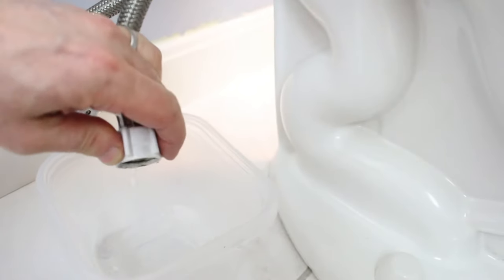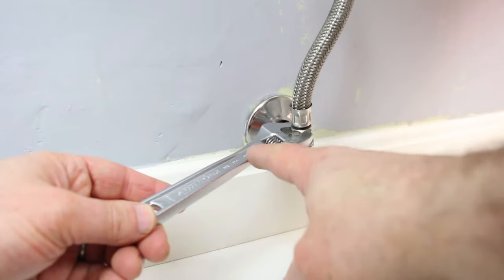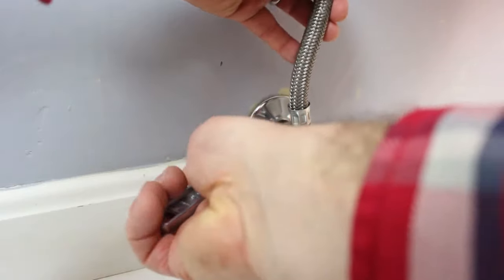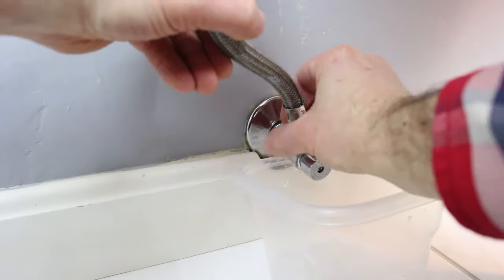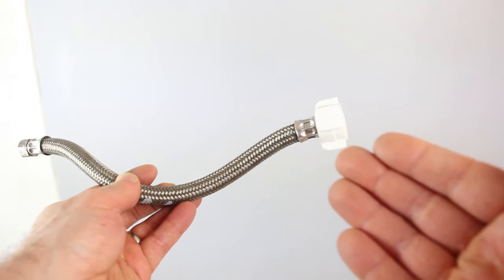Then you can empty any water from the water supply line down into the container. Then use pliers or a crescent wrench to remove the old supply line from the shutoff valve. Best thing to do is to take the old water supply line with you to the home store.